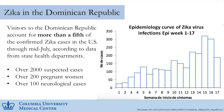In the Dominican Republic right now there's a huge explosion of Zika virus. Neurological effects are being studied there, and we're seeing many very severe cases. There are over 2,000 suspected cases, over 200 pregnant women affected, and over 100 neurological cases — though these numbers are already a few weeks old and the current numbers are higher.